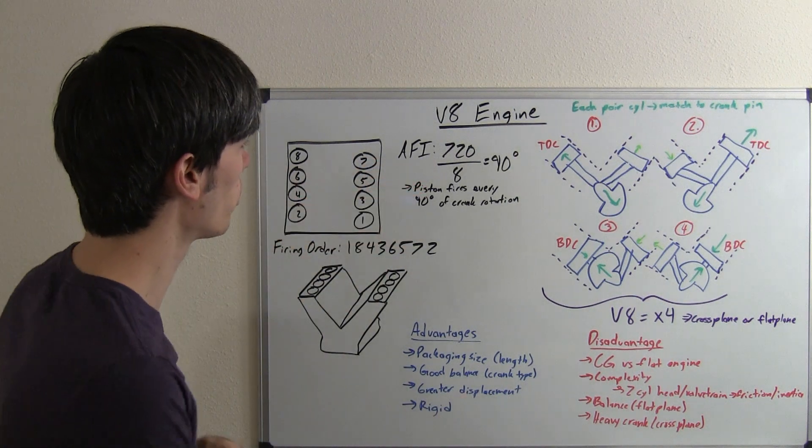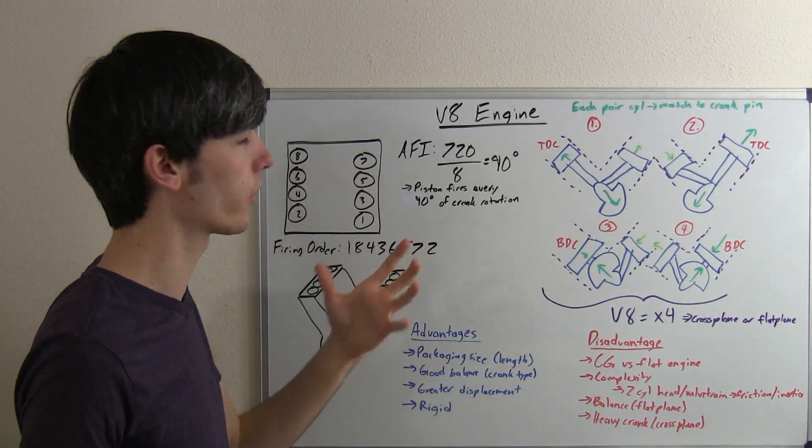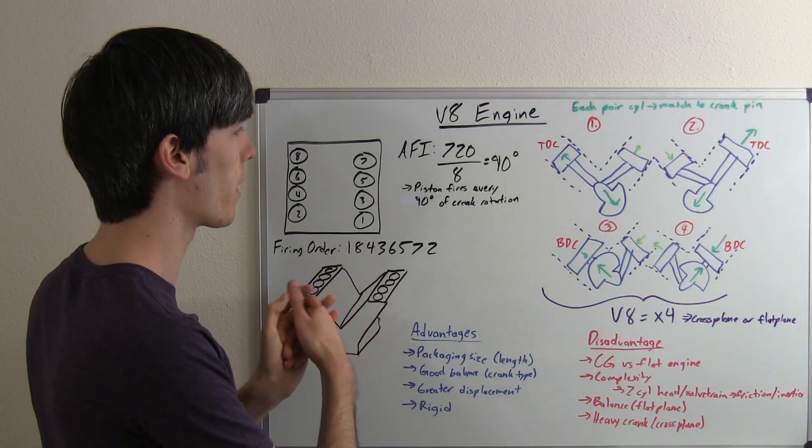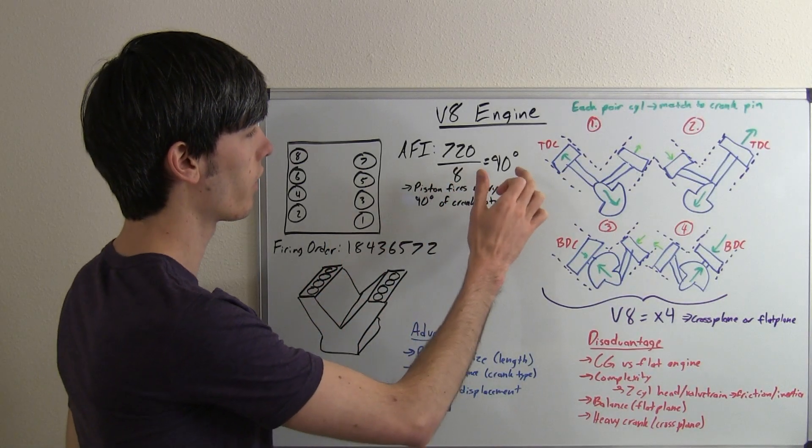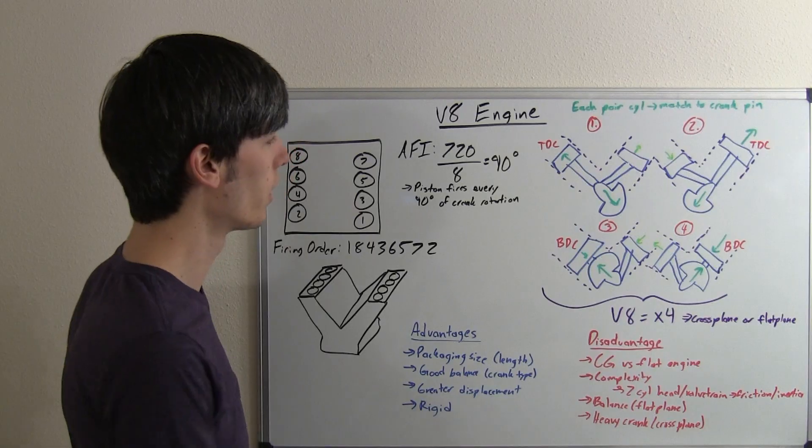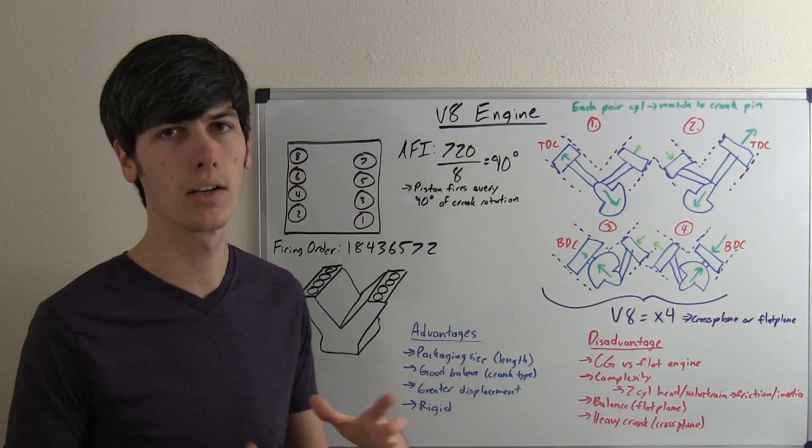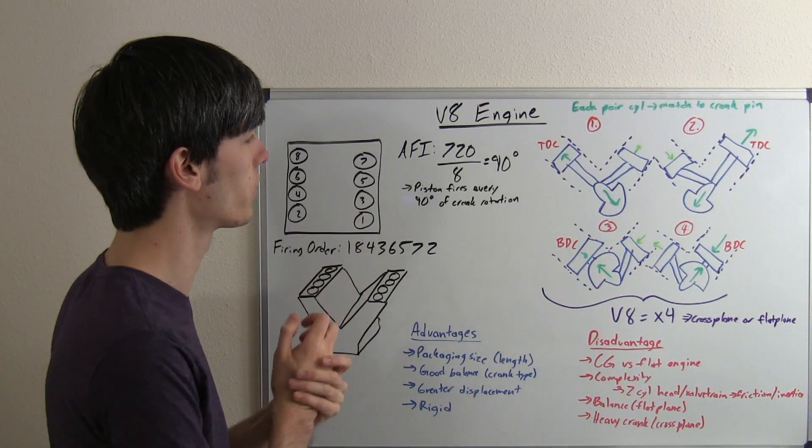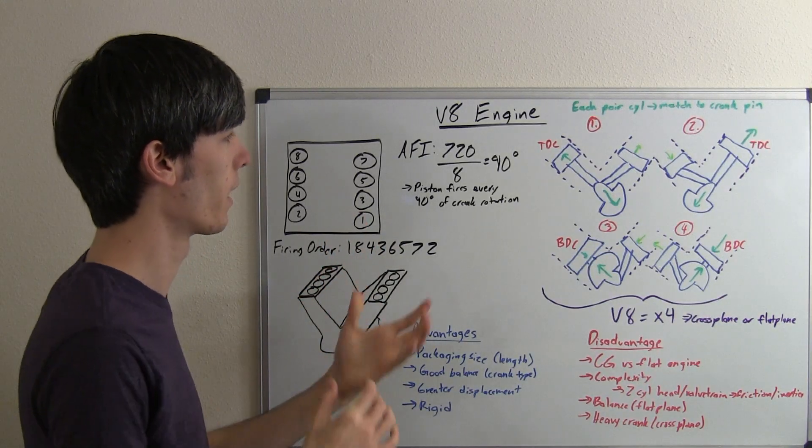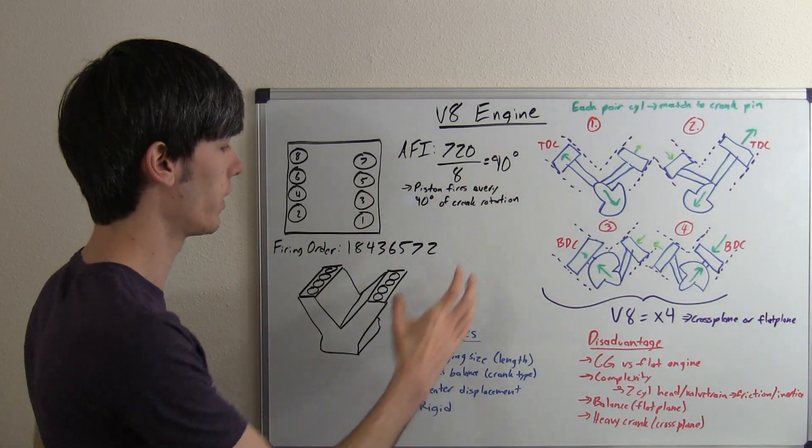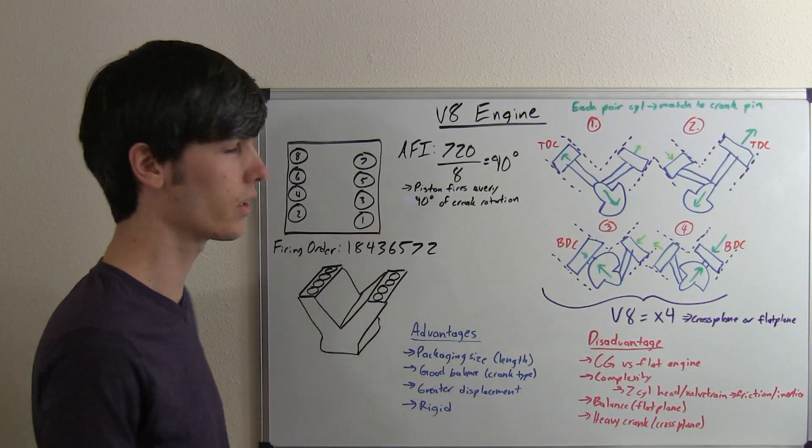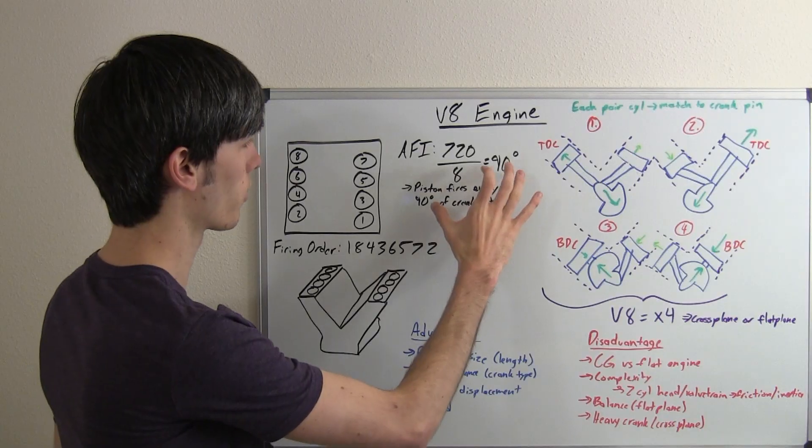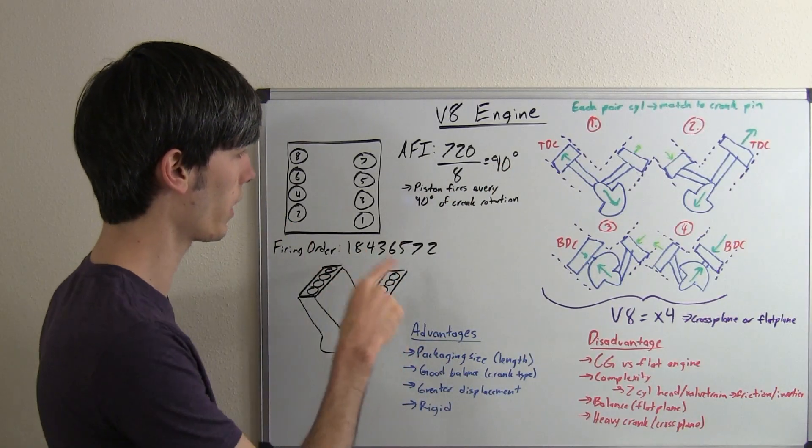Now, average firing interval we know from our engine balance video that's equal to the number of strokes multiplied by 180 degrees divided by the number of cylinders. 720 divided by 8 equals 90 degrees. So 90 degrees, that means we want a cylinder to fire every 90 degrees of crankshaft rotation. So that will also be beneficial in setting up the layout of the engine. So it's going to be a 90 degree V8 to compensate for this 90 degree offset of the firing interval.